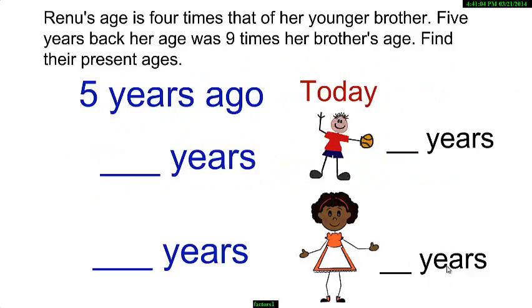Let Reno's brother be x years old today. We know that Reno will be 4x years old today because she is 4 times as old as her brother. Can you find their ages 5 years ago? Her brother is x minus 5 years old, and Reno is 4x minus 5 years old.